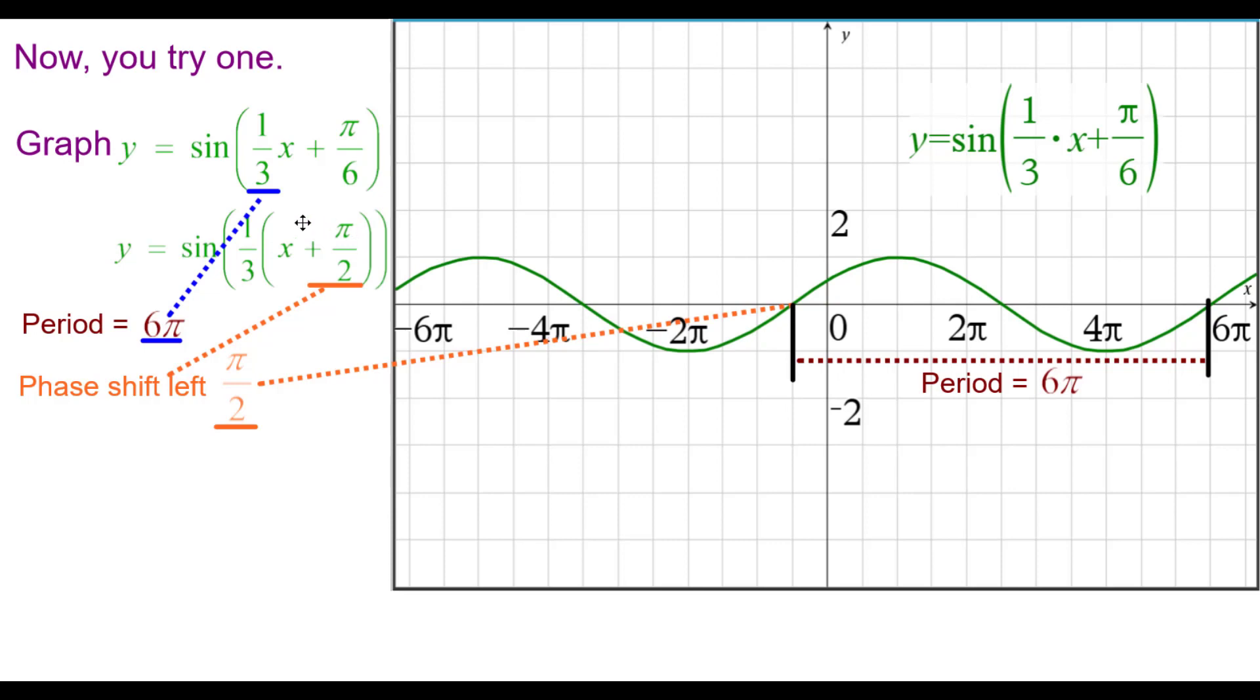So this is what the graph looks like here in green. You can see that the period is 2 pi divided by 1 third, which is 6 pi. And you can see that it goes through its whole sine curve stretched out to 6 pi. When I factored out the 1 third, the phase shift is left pi over 2. So you can see instead of being at the origin, it's back pi over 2. Pause if you need to do so. This is the end of the video.